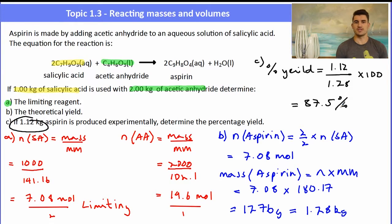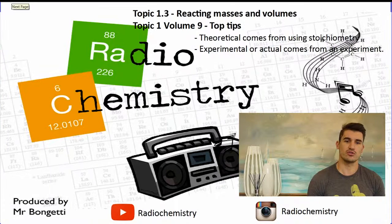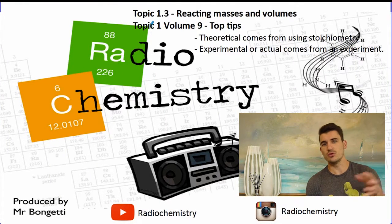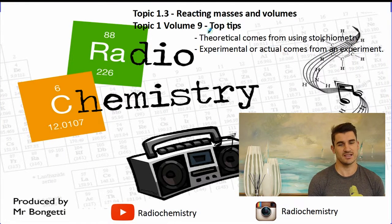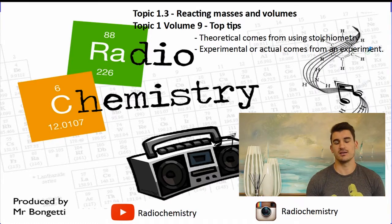Okay, a couple of top tips for volume 9: theoretical comes from the stoichiometry, and the experimental or actual comes from an experiment. It's always the smallest one divided by the larger one. Thanks for watching guys, don't forget to drop a like on the video, subscribe if you're new, and I'll see you next time.